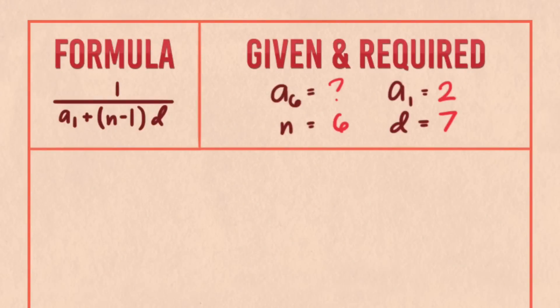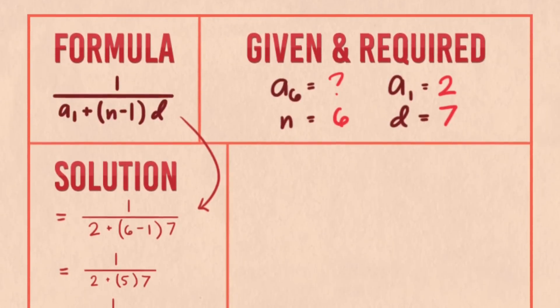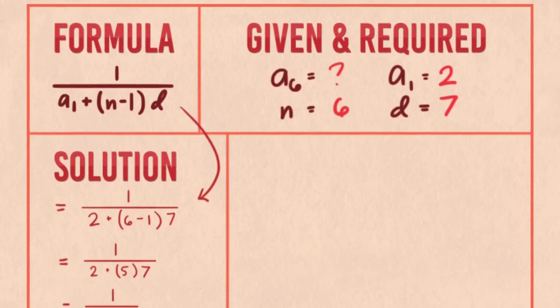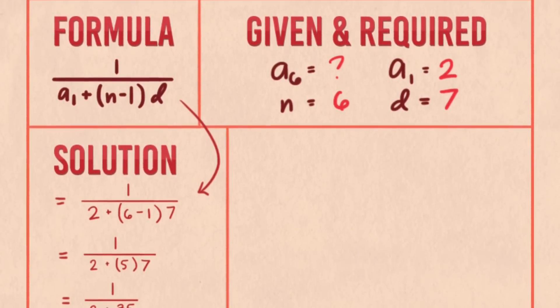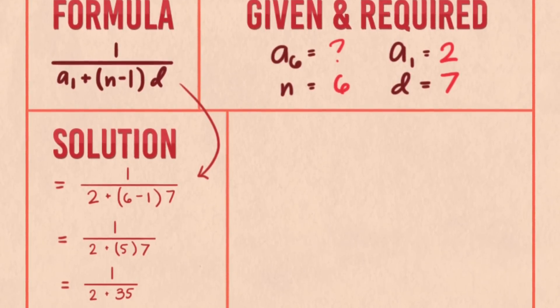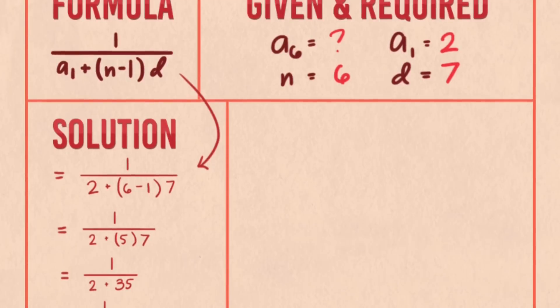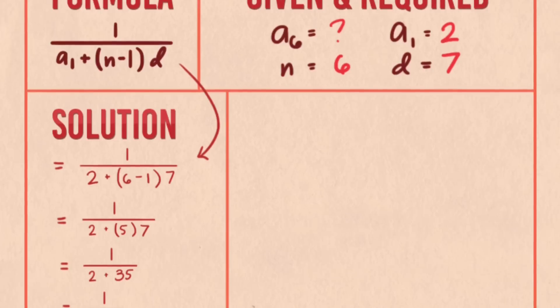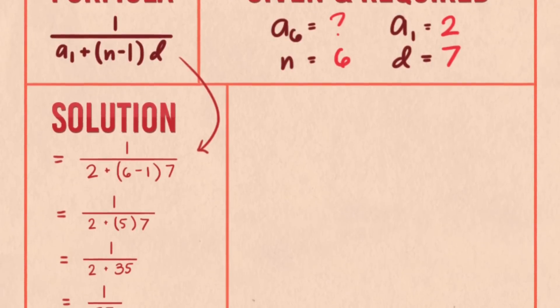We can solve this by using the formula: 1 over a sub 1 plus quantity n minus 1 times d. The given are n equals 6, a sub 1 equals 2, d equals 7. We are now looking for a sub 6. To solve this, we just substitute the given values to the formula. So 1 over 2 plus quantity 6 minus 1 times 7, which is then equal to 1 over 2 plus 5, because of 6 minus 1, times 7. 5 times 7 is equal to 35.